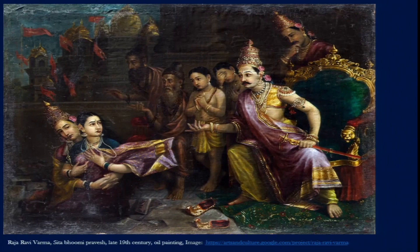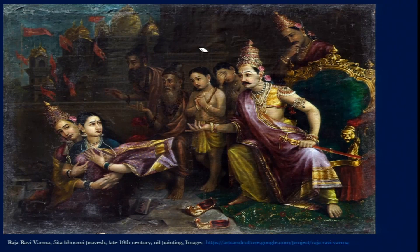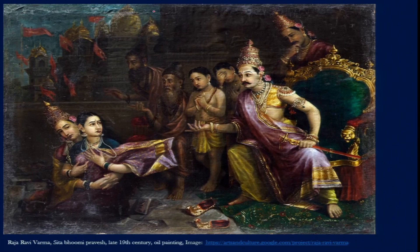Beside Rama we see their twin sons Lava and Kusha, almost in darkness, with expressions of bewilderment and astonishment at this unexpected miracle. In the background there is another figure in a pensive mood, perhaps Lakshmana, who mourns Sita's Bhoomi Pravesh. We also see a large pillar and part of a balcony through which the rest of the palace complex is visible — an imaginary reconstruction of the palace of Ayodhya.